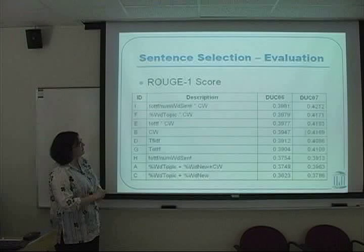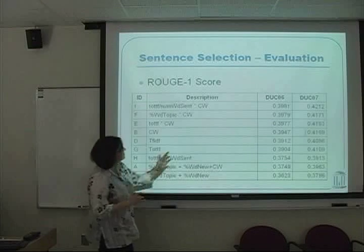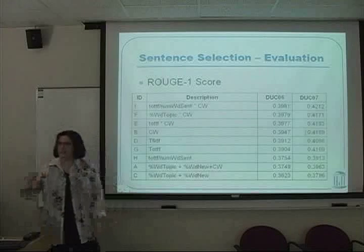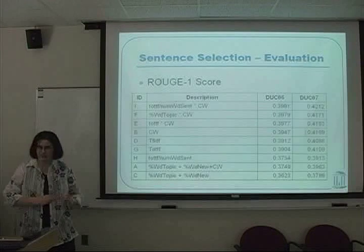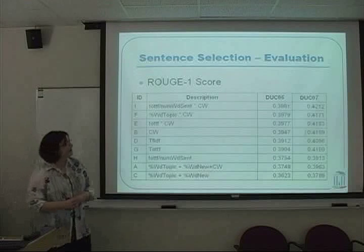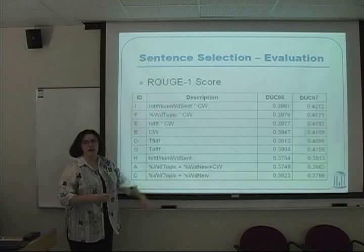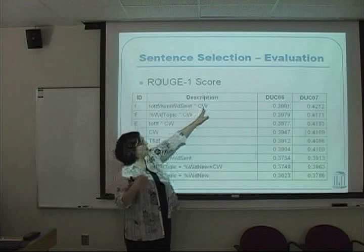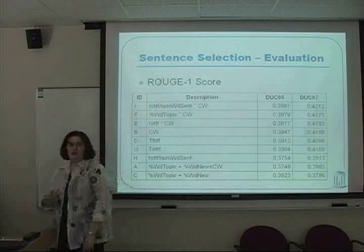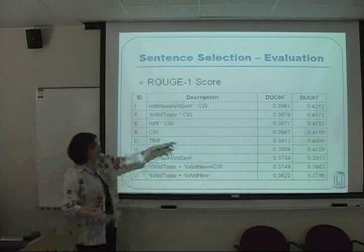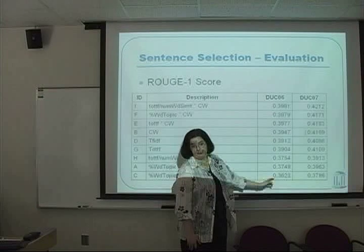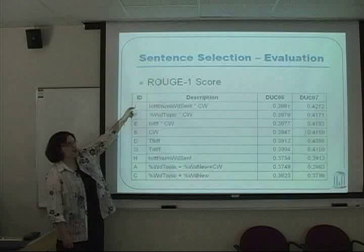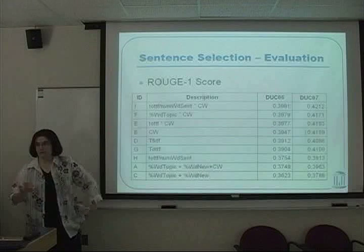I don't recall exactly what the average performance was on 2006, but I optimised these sentence selection strategies based on the DUC 2006 material. The one that worked best was this weighted approach — favouring new words and words in the topic, combined with the cluster weight. That selection strategy had the biggest effect, really improving performance over the weakest selection strategy. This was the strategy I used for the 2007 original submission.